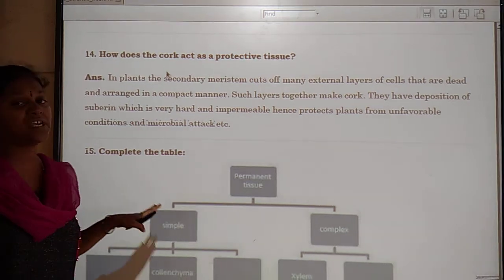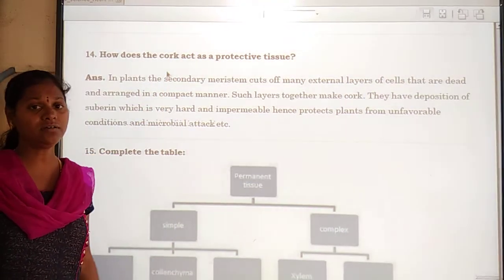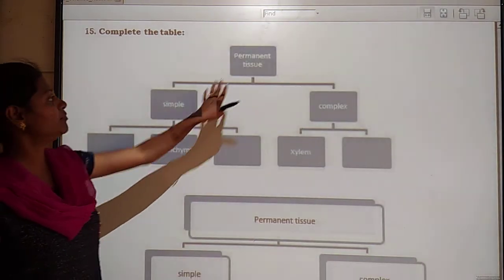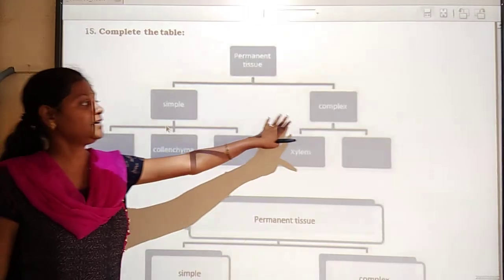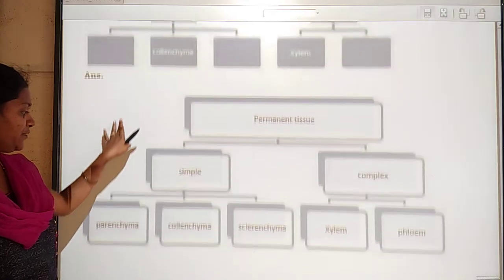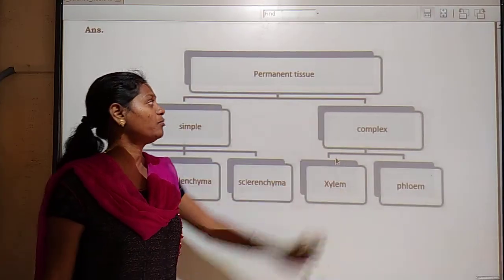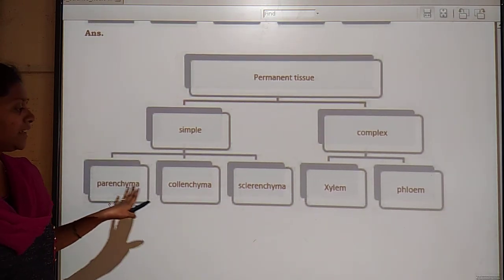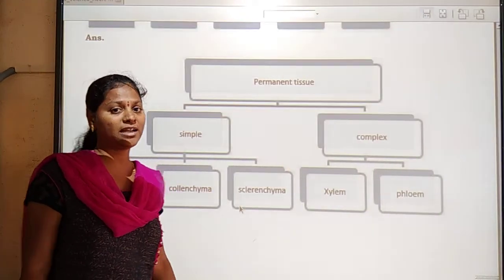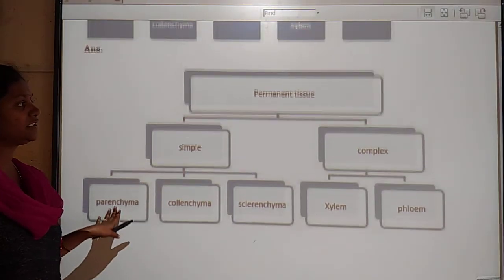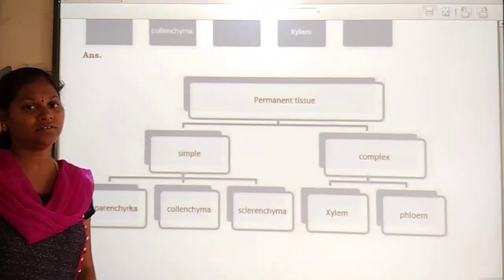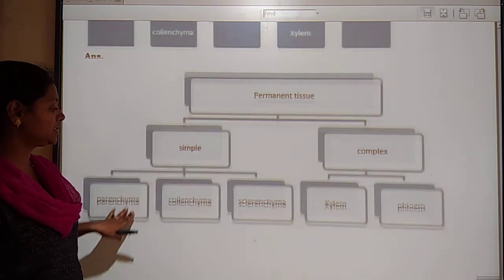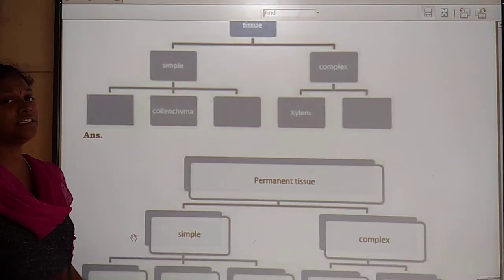This is the main function of cork tissue in the plant. The last part is to complete a table on permanent tissue, which is divided into simple permanent tissue — classified as parenchyma, collenchyma, and sclerenchyma — and complex permanent tissue, classified into xylem and phloem. This completes the exercise solution on the tissue chapter.